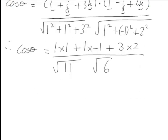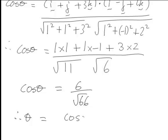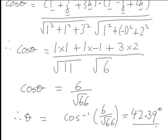So that all simplifies down to give cos theta equal to 6 divided by the square root of 66. Hence the angle between the normal and the line is cos inverse of 6 divided by the square root of 66, which works out to be 42.39 degrees, correct to two decimal places.